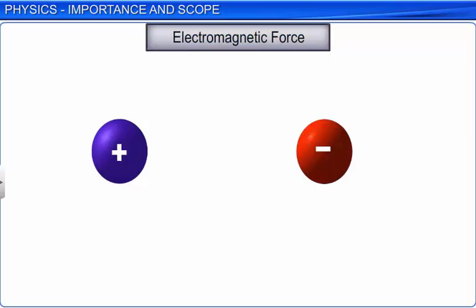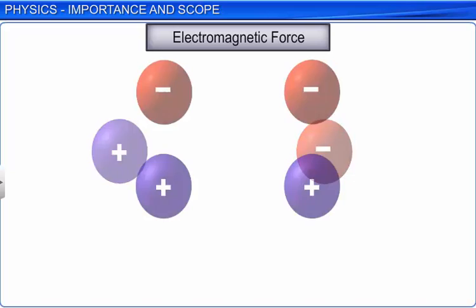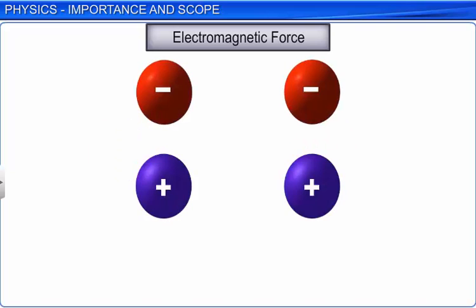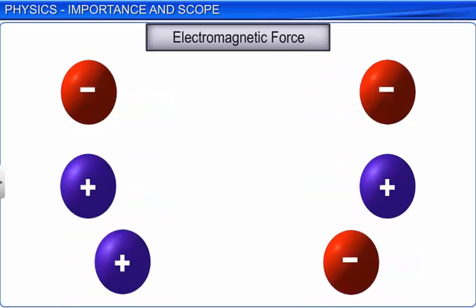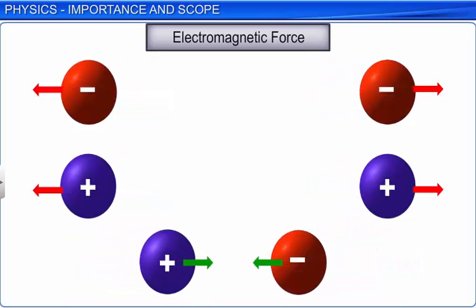Electromagnetic force is the force between two charged particles. Like charged particles repel each other and unlike charged particles attract. Like gravitational force, electromagnetic force is also universal and can act over very large distances.